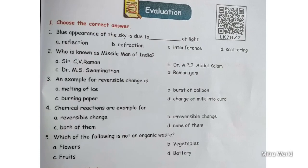Fifth question: Which of the following is not an organic waste? Options are: flowers, vegetables, fruits, battery. Not an organic waste — very good children — Option D, battery. Okay children, now check your answers.